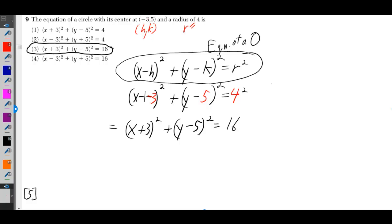So you plug in the negative three where you see the h, the five where you see the k, and the four where you see the r. The minus minus can become a plus, and four squared can become 16, so you get answer choice three.